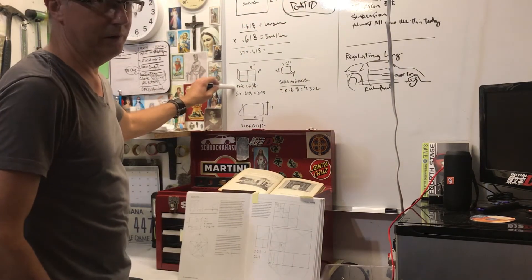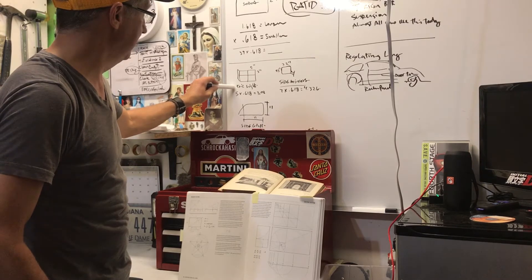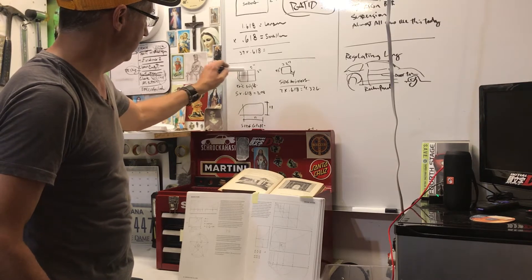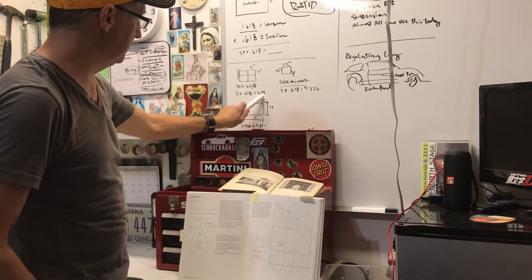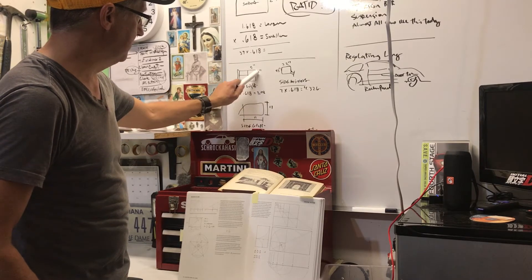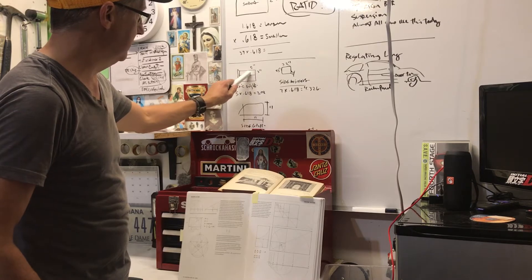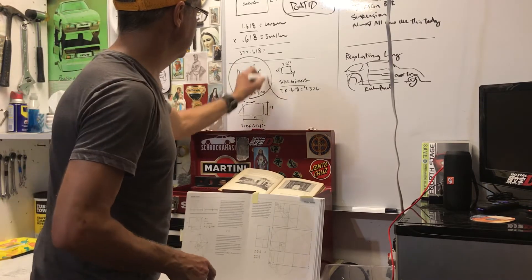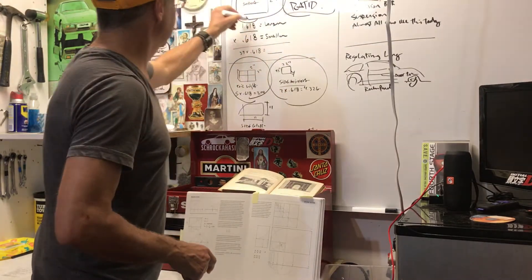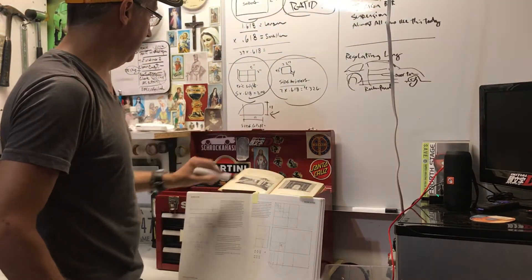Essentially, the taillights on a 944, which are essentially 5 inches, the little individual squares, are 5 inches, times 0.618. It comes out to 3.08, and that's what they are in vertical height. So, there's an example of the golden ratio. There's one here, there's one here, there's one here. And also on the side glass.